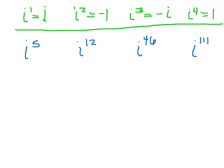Every single value of i raised to a power can be reduced to one of these four things: i, negative 1, negative i, or 1. And we did this in class, but I'll review it again here.